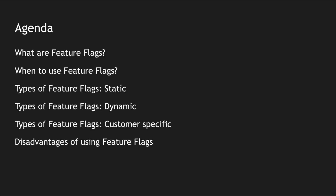As usual, our agenda goes like this: we are going to look at what feature flags are and when to use them, we are going to look at the different types of feature flags and how you can use them, and finally we will close off with some disadvantages of using feature flags. As a continuation to this video, if you are interested, we can see how to implement feature flags in upcoming videos.